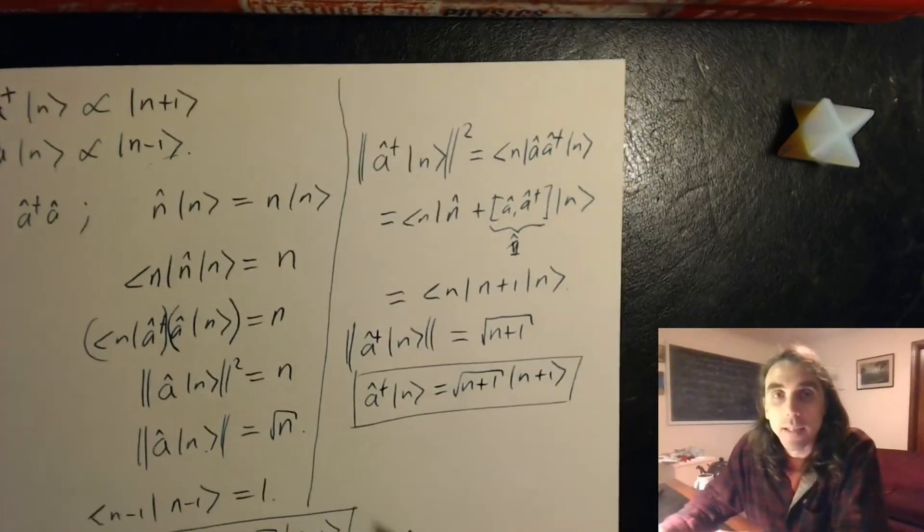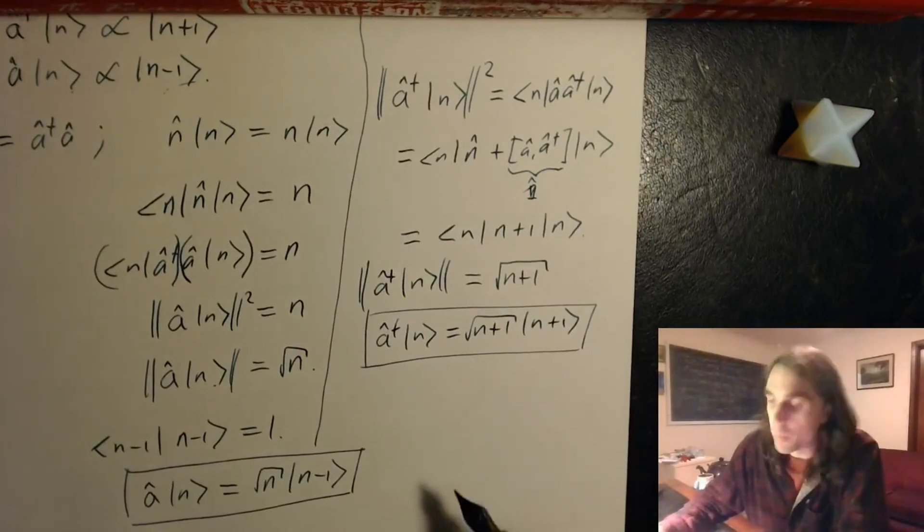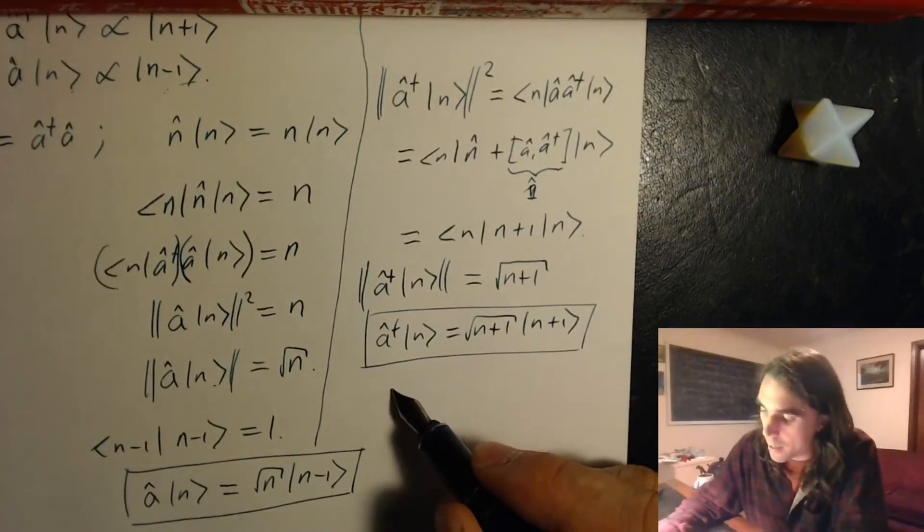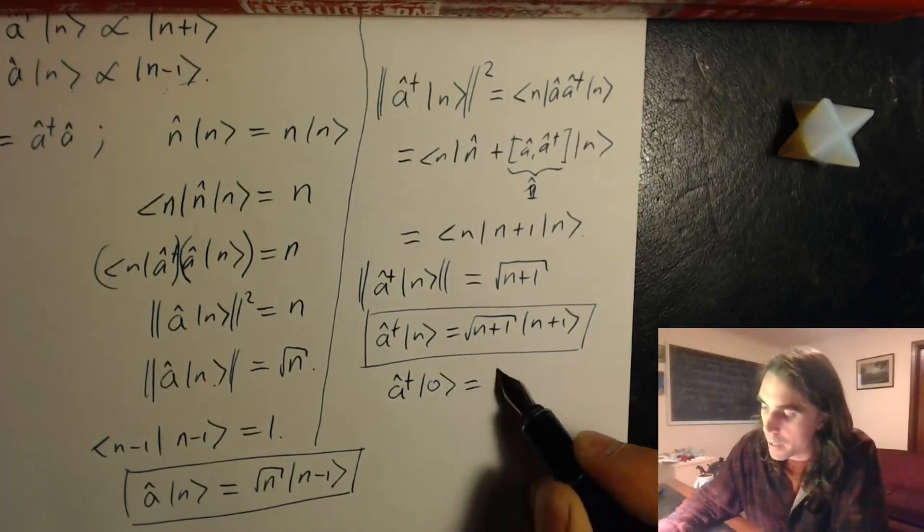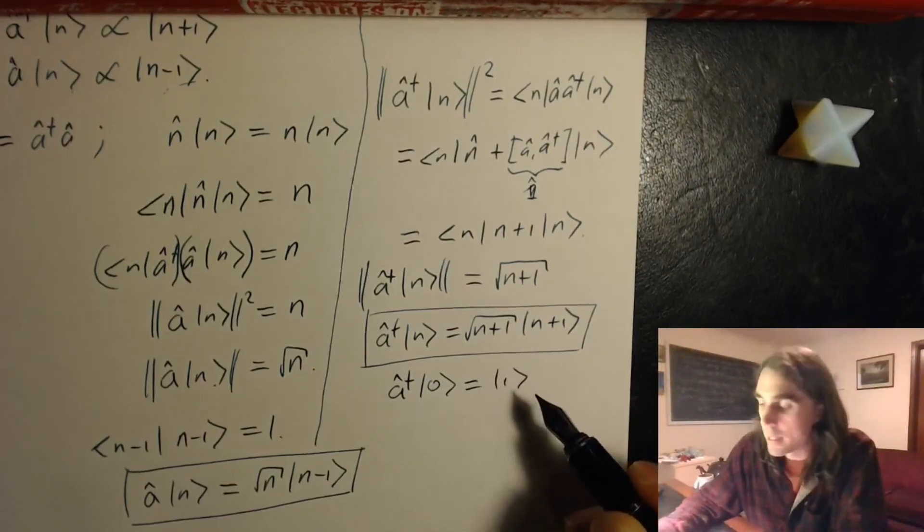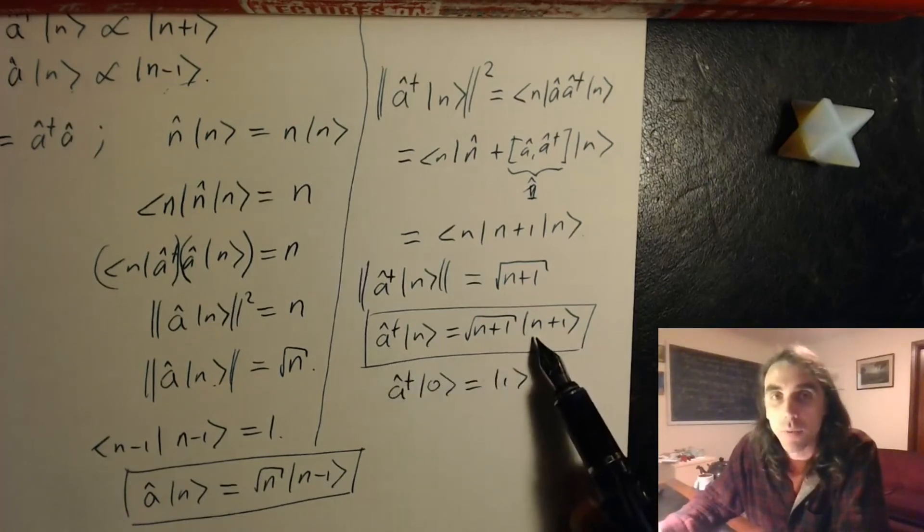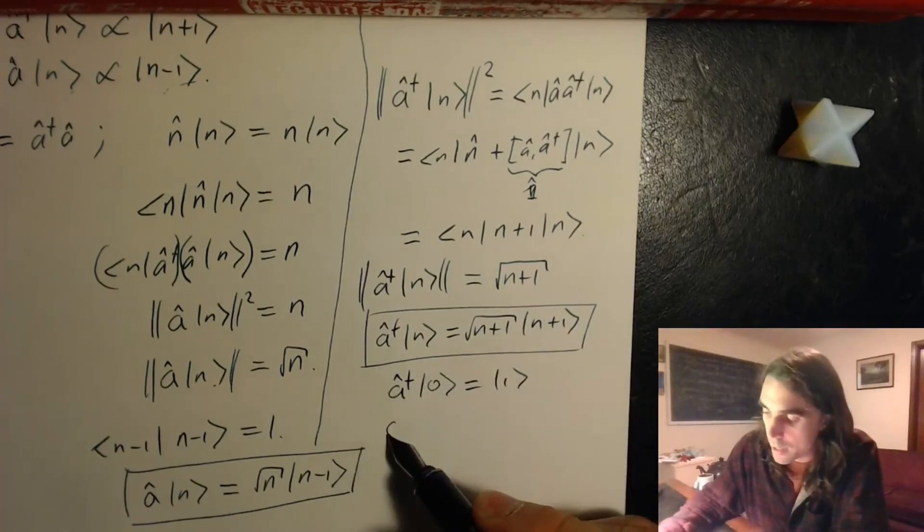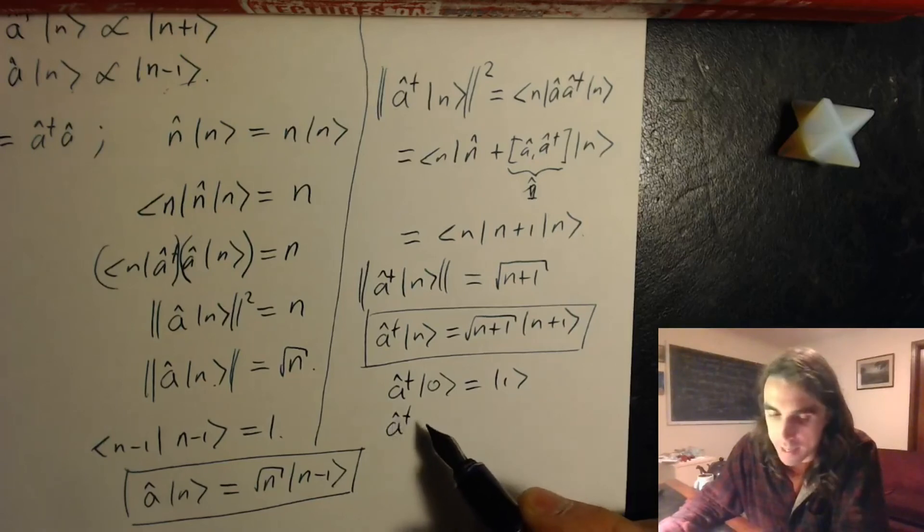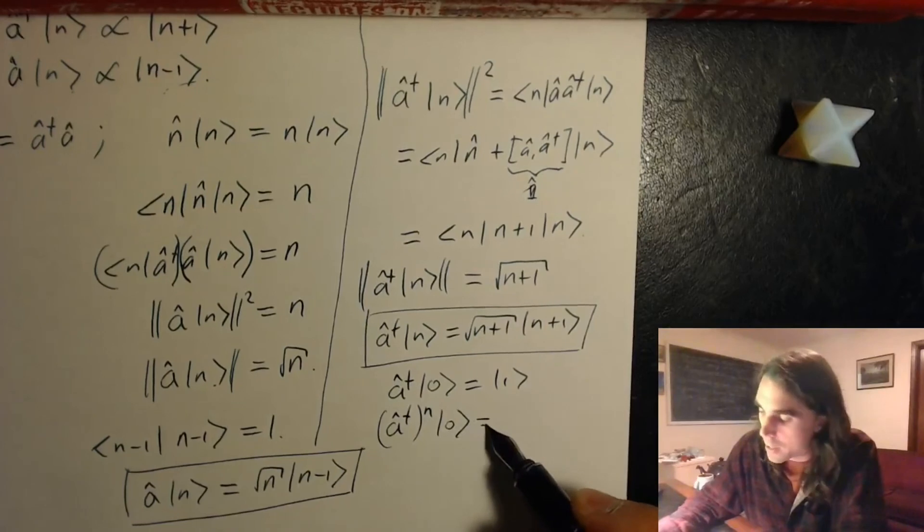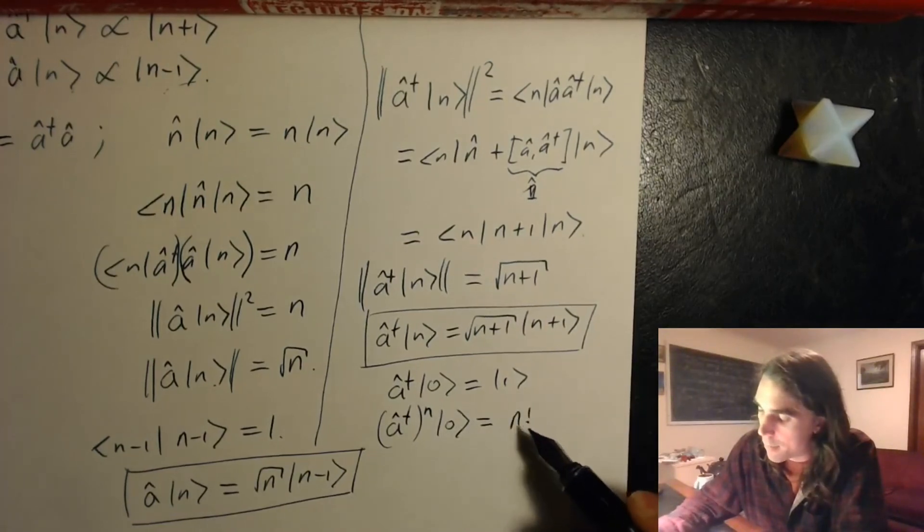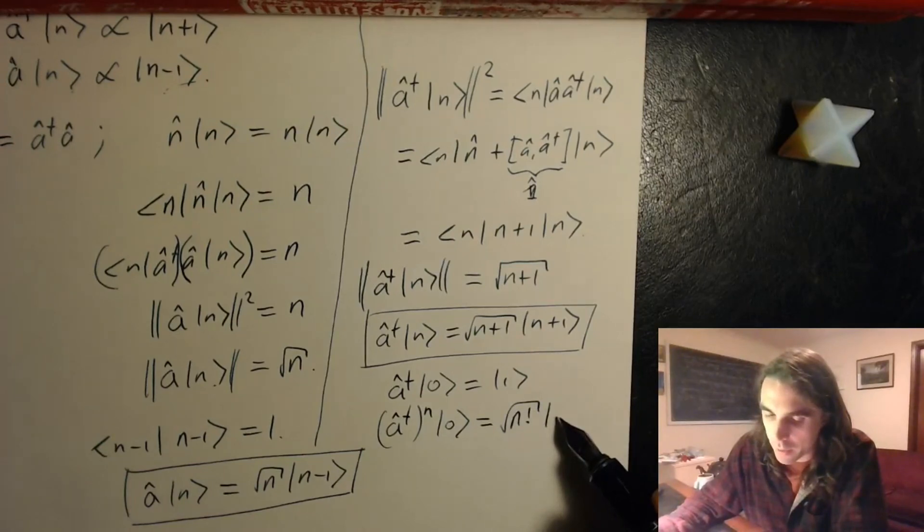And finally, we can say that starting from the state 0, we can act a dagger on 0 to get state 1, and that's normalized. If we apply this chain of reasoning from this normalization, you can see that acting a dagger n times on the state 0 gives us square root of n factorial times the state n.